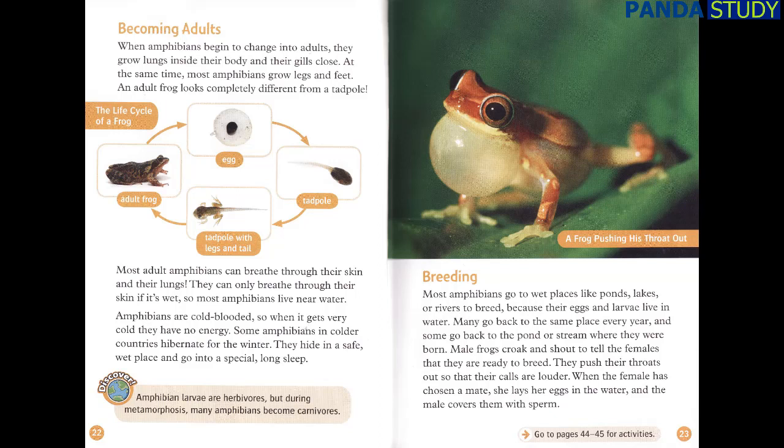Breeding. Most amphibians go to wet places like ponds, lakes or rivers to breed, because their eggs and larvae live in water. Many go back to the same place every year, and some go back to the pond or stream where they were born. Male frogs croak and shout to tell the females that they are ready to breed. They push their throats out so that their calls are louder. When the female has chosen a mate, she lays her eggs in the water and the male covers them with sperm.